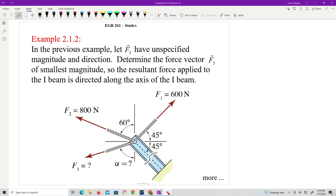But we do know that we want it to have the smallest magnitude so that our resultant force, the sum of all three of them that are applied to this I-beam, is along the direction of the I-beam. So we're saying our resultant force is going to be along this direction. What is this force and magnitude, the direction and everything?